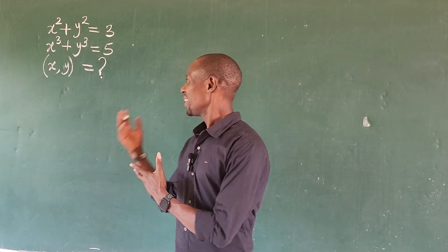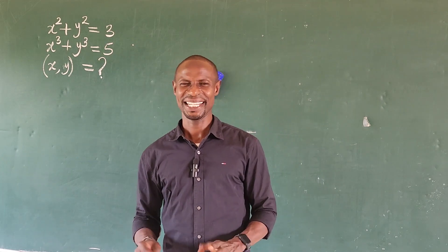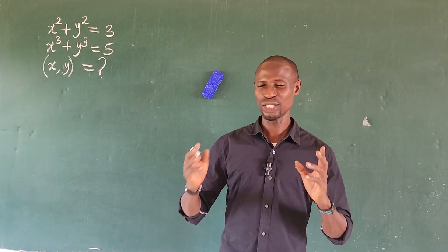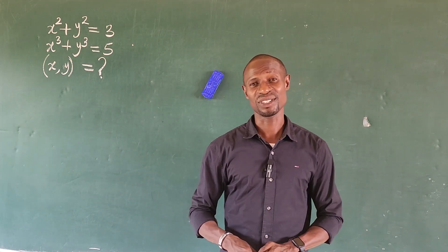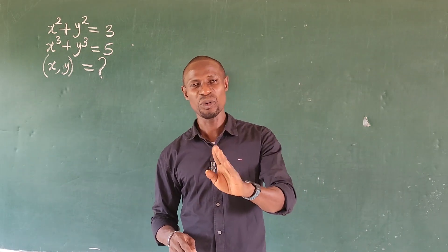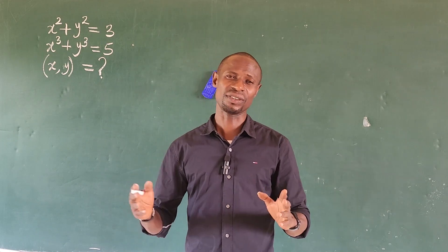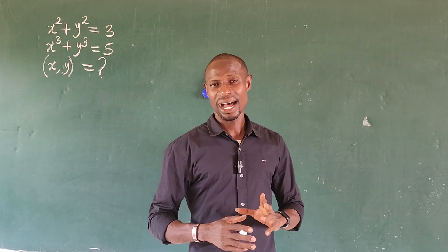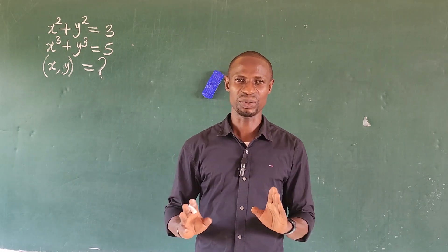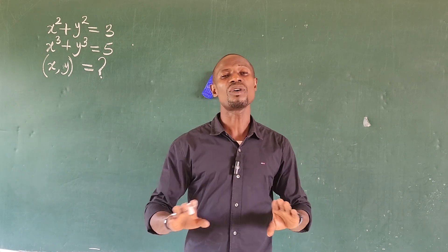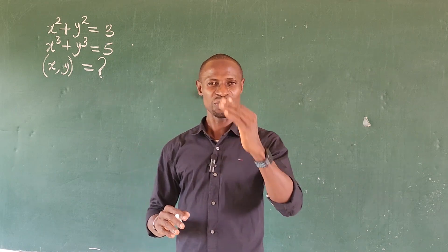Hi everyone, here we have a challenge on the board: a system of simultaneous equations. We want to end the year 2023 with this equation. This simultaneous equation has six roots, and we're going to solve for all six. I discovered that this challenge has four real roots and two imaginary roots, and in this video we're going to solve for all six.